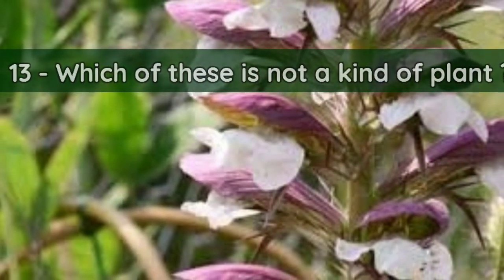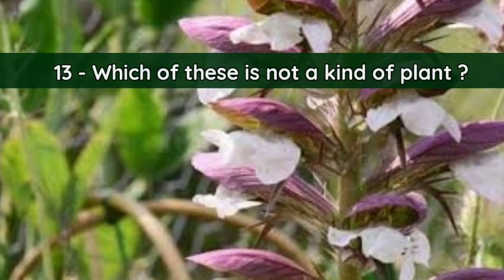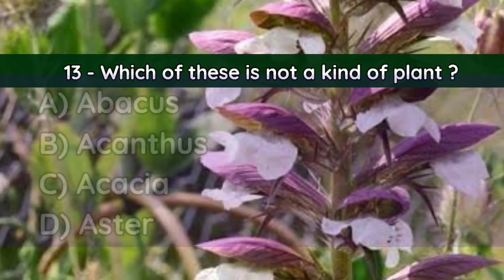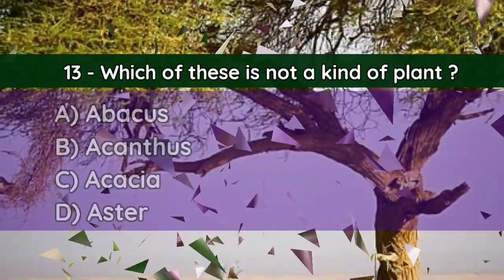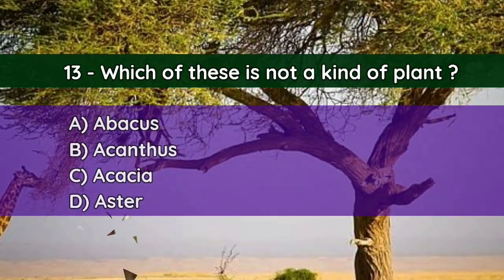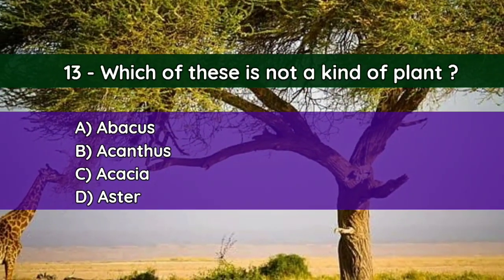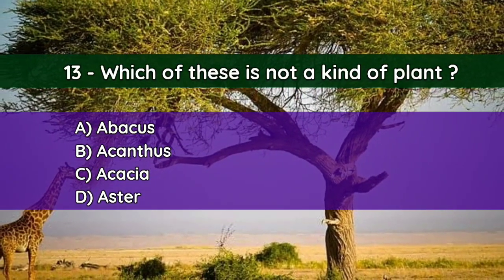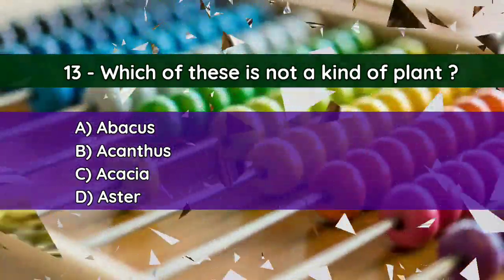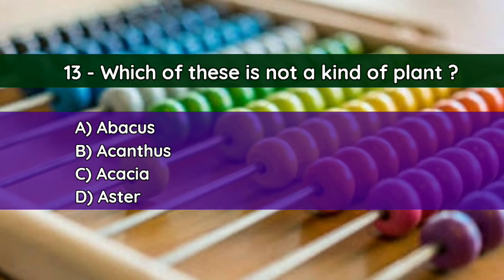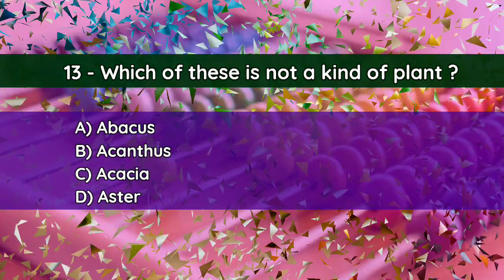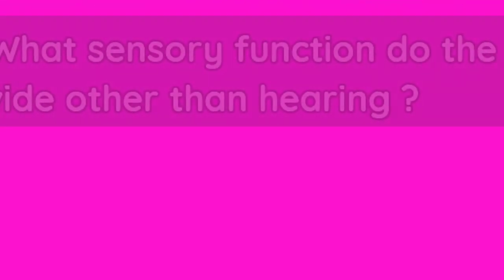Question number thirteen: Which of these is not a kind of plant? A. Abacus, B. Acanthus, C. Acacia, D. Aster. And the correct answer is A — Abacus.